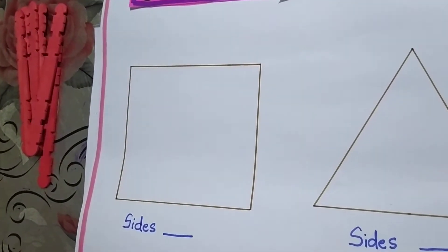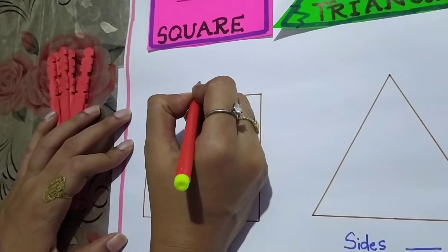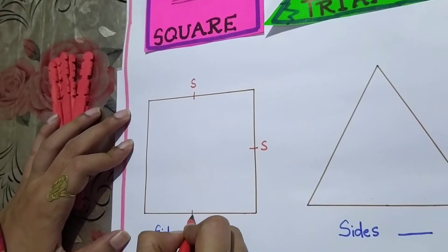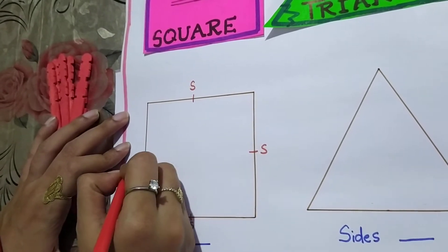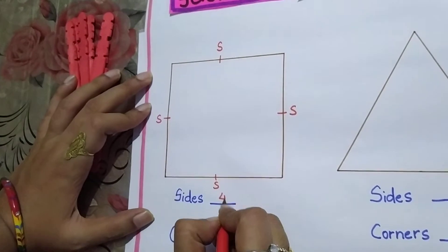And if you have to count, how will you count? We will write S for sides. One, two, three and four. So number of sides in a square will be four.